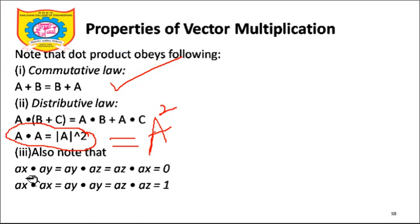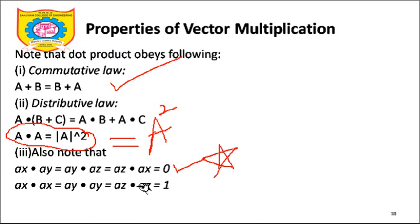The last important property — you know this in terms of i, j, k — we will remember it in terms of â_x, â_y, â_z. So â_x dot â_y, â_y dot â_z, and â_z dot â_x is zero. Star mark this — it is very, very important since we need this basic property throughout vector multiplication and electromagnetic problem discussions. Any dissimilar unit vectors you take will result in zero.